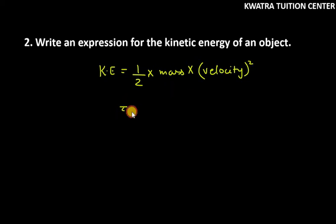It is represented as half, mass is represented by m. Velocity is represented by v, v square. The kinetic energy formula or expression is half mv square.